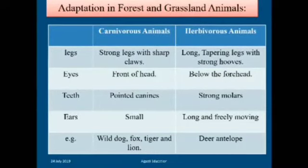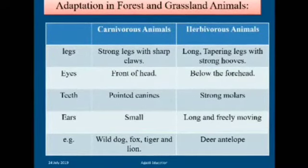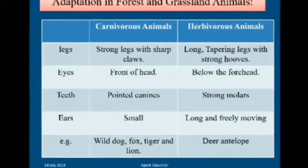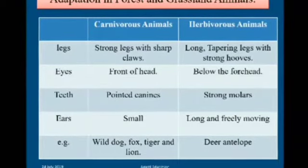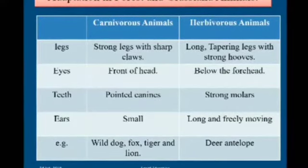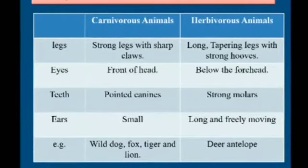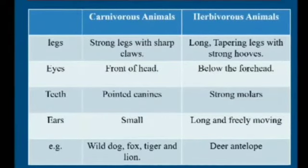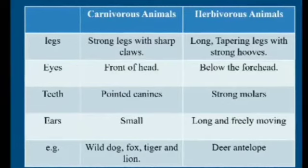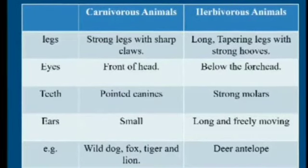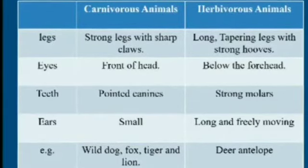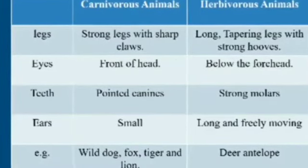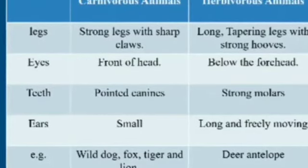Let us see adaptation in forest and grassland animals — carnivorous animals and herbivorous animals. In carnivorous animals, legs are strong and sharp with claws; in herbivorous animals, long tapering legs with strong hooves. Eyes in carnivorous animals are at the front of the head; in herbivorous animals, eyes are below the forehead. Carnivorous animals have pointed canine teeth, while herbivorous animals have strong molars. Ears of carnivorous animals are small; in herbivorous animals, ears are long and freely moving.